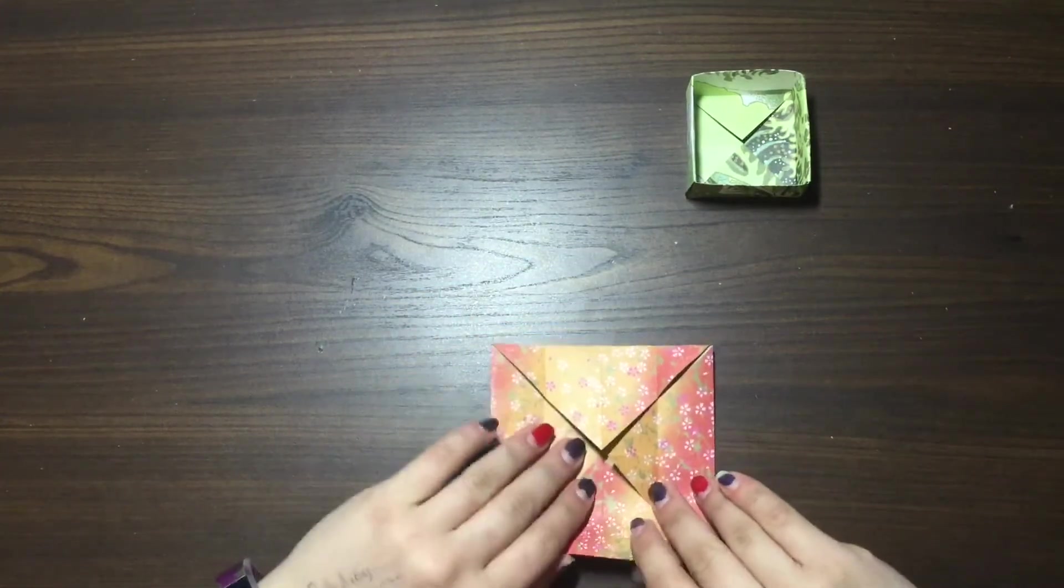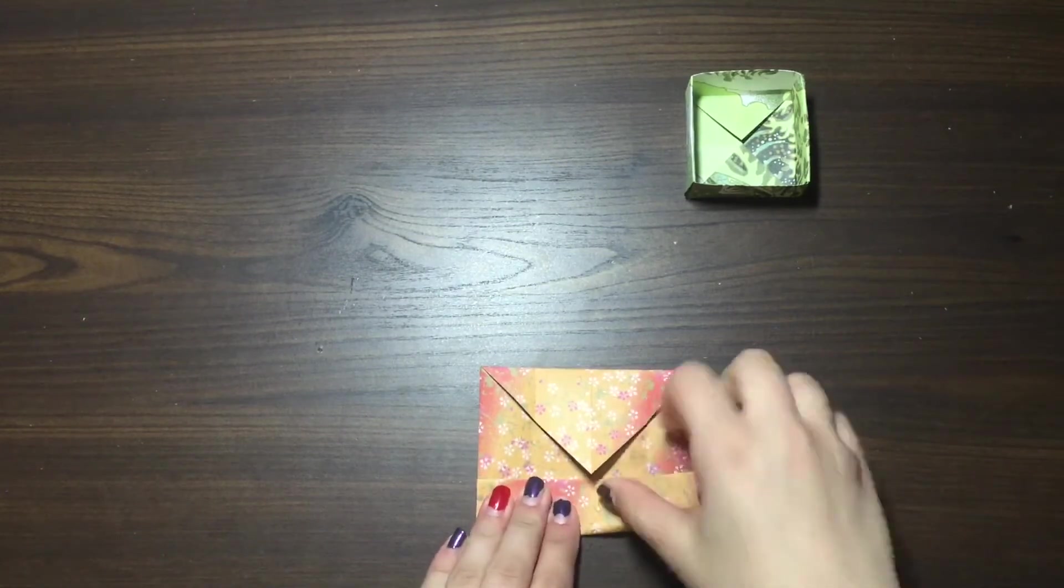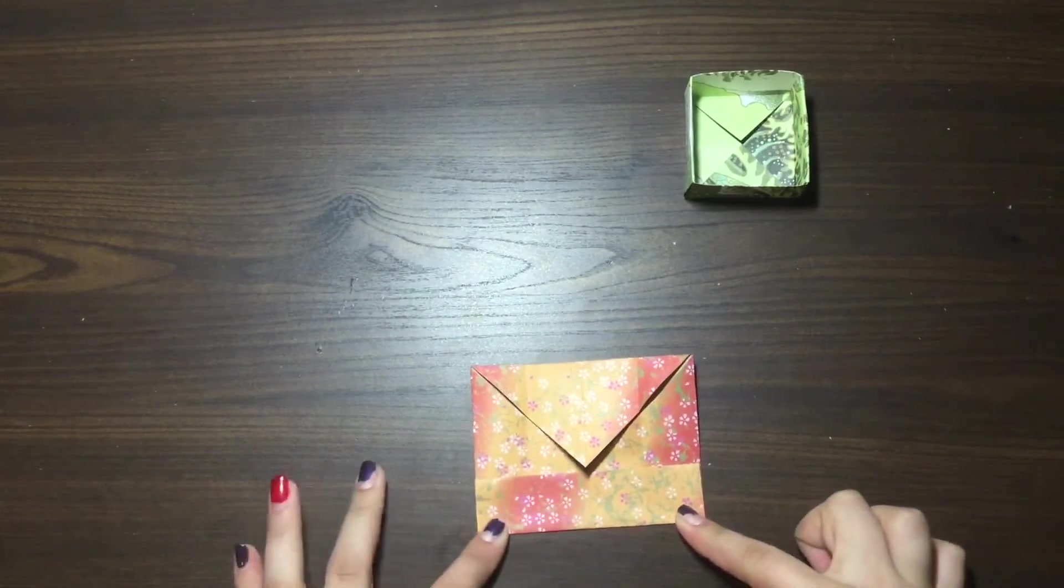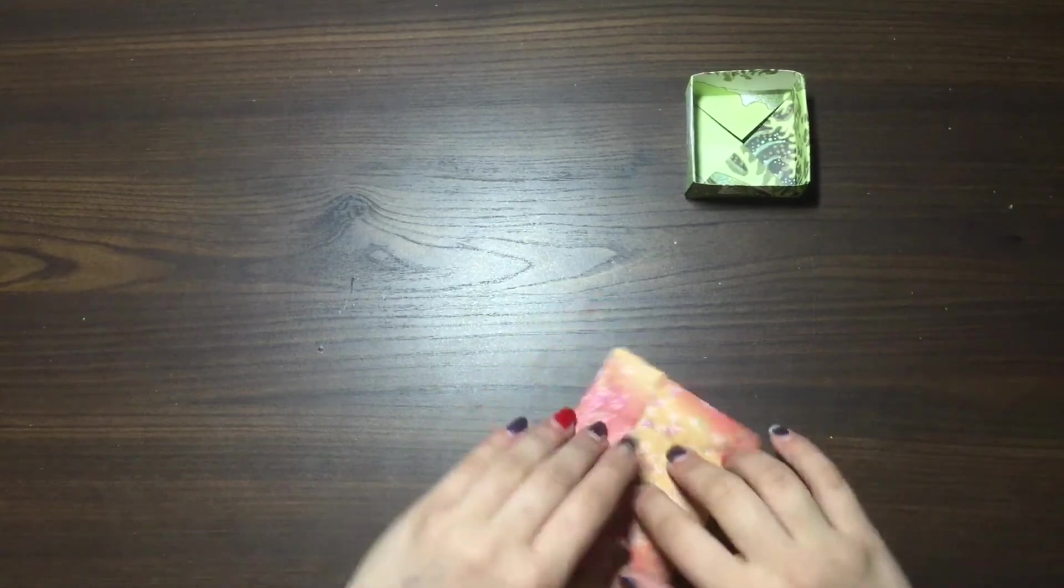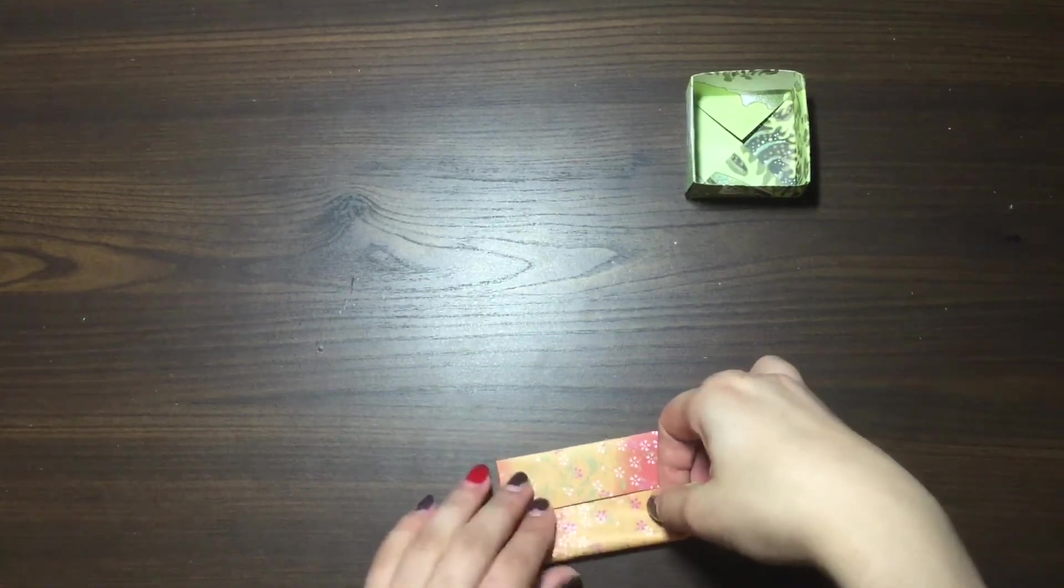Then you're going to do the exact same thing to the other two flaps. So you're going to bring the half to the middle crease, and you're going to make a nice fold. And you're going to do the exact same thing on this side, bringing it to meet the other flap.